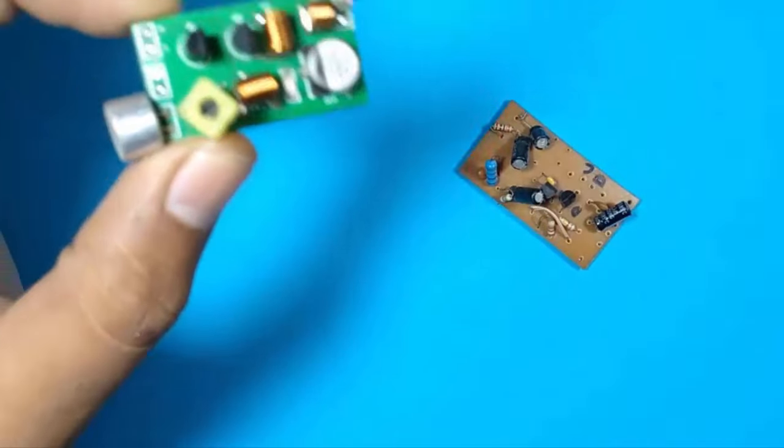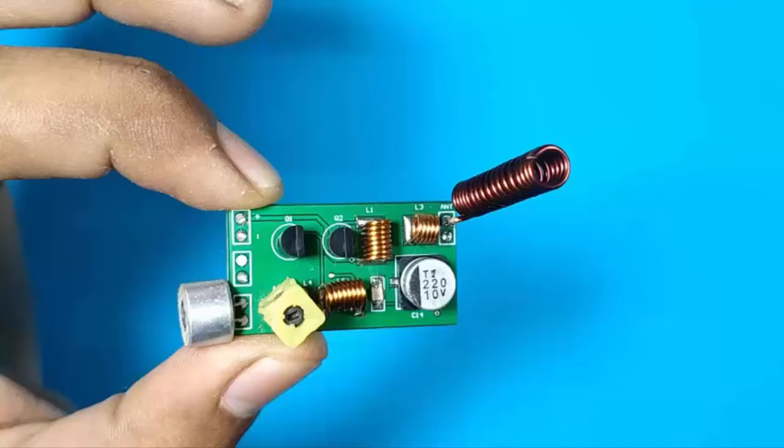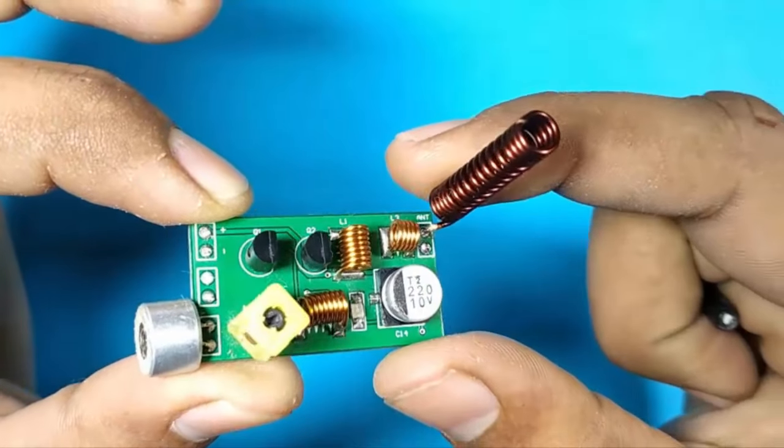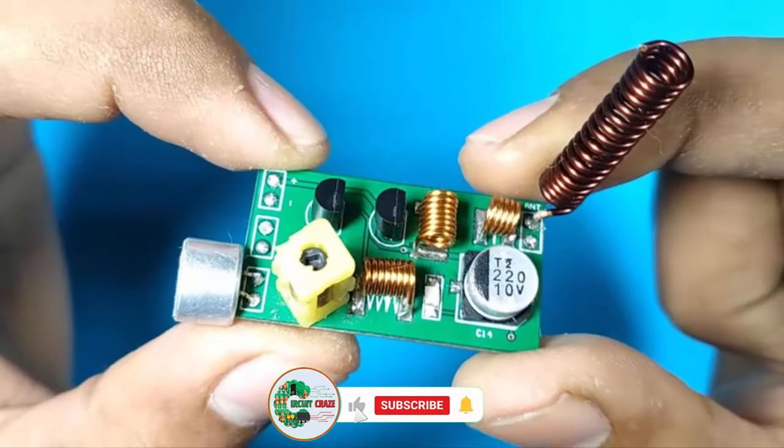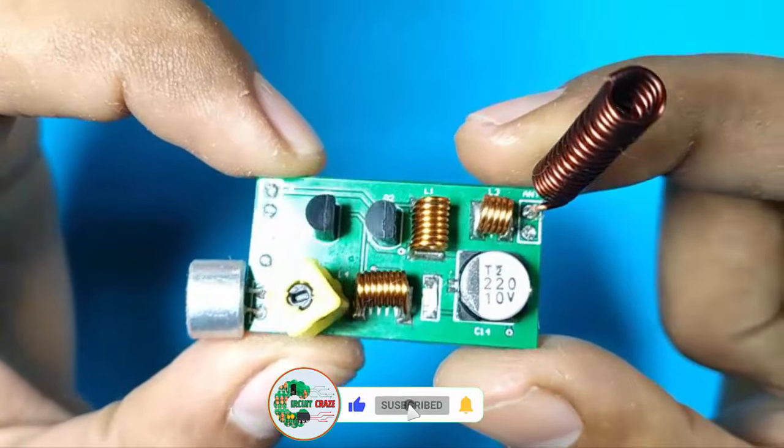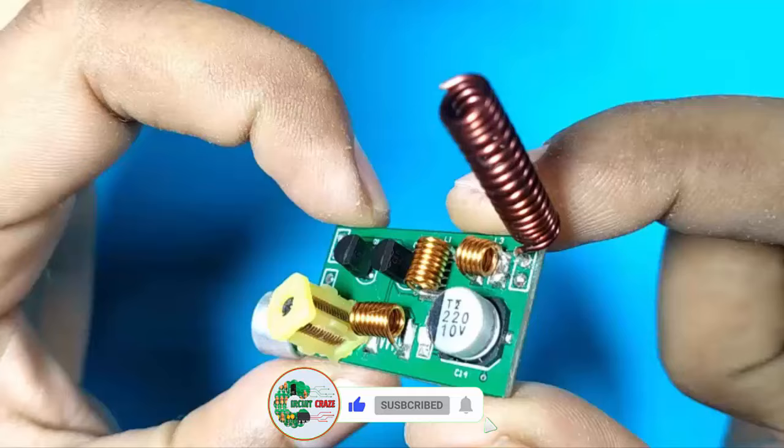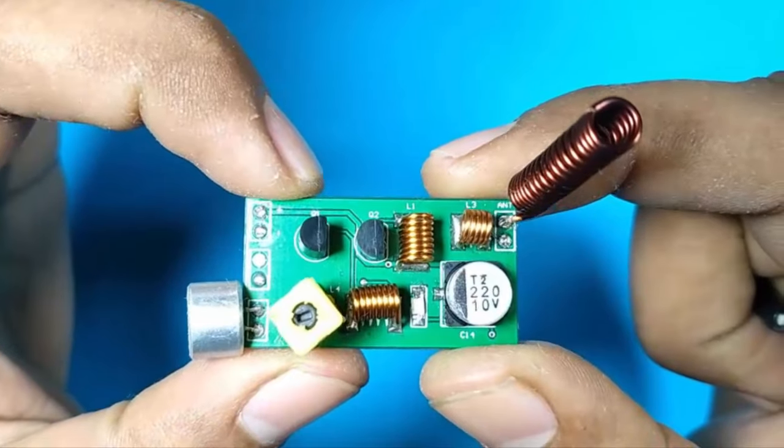I decided to design a highly stable transmitter with different frequency adjustment and long range. So I designed this FM transmitter circuit with good stability and a long range of up to 750 meters. Full circuit explanation is in the next video.